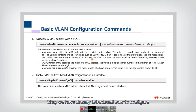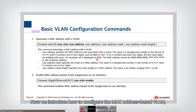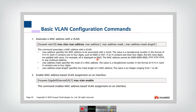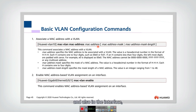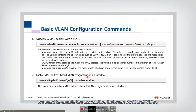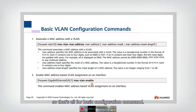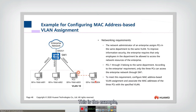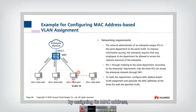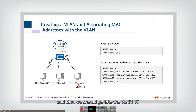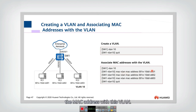Now let's look at how to configure MAC address-based VLAN. The basic configuration requires associating a MAC address with a VLAN using the MAC VLAN command, and then enabling the MAC-VLAN association on the interface. In this example, to configure VLAN 10 by MAC address assignment, we first create VLAN 10, then go into VLAN 10 and use the 'mac-vlan mac-address' command to associate three different MAC addresses with this VLAN.